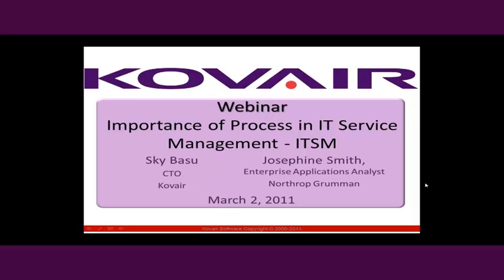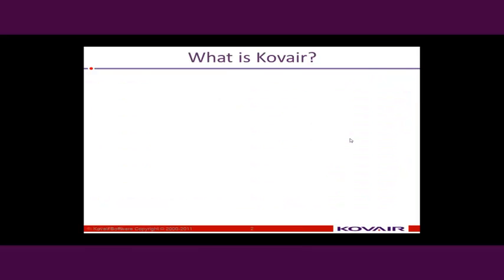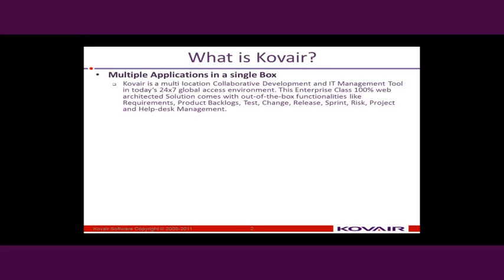So what is Covier? One way to look at Covier is it is a box of a number of different tools in the areas of Application Lifecycle Management or ALM and IT Service Management or ITSM. In the ALM side, we have requirements, issues, tests, risk, release, etc. And in ITSM, we actually have an implementation of ITIL. Today, we'll be focusing more on the ITSM side with respect to the process.